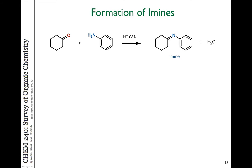One of them being the formation of what we refer to as an imine. An imine is a molecule which contains a carbon-nitrogen double bond, and these are formed very readily under acid catalysis when you take an aldehyde or ketone and react it with a primary amine.